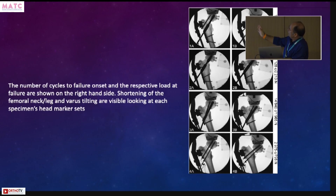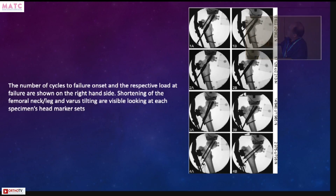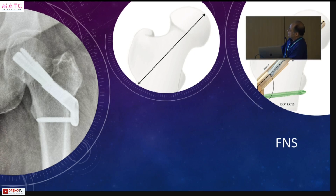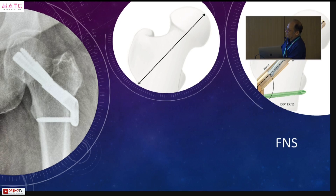How do we extrapolate this to fixation methods? Different fixation techniques would point to whether the position of the implant — three cannulated cancellous screws compared to the present generation FNS or DHS — would lead to more loading of the lateral cortex and cause earlier failures. I wanted to put it in perspective clinically: in a basic cervical fracture, if you try to put a present-generation implant with less than 75 or 80 millimetres of neck length, you might have to choose a different implant.